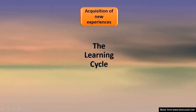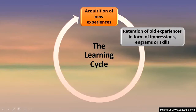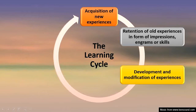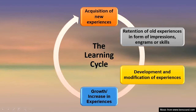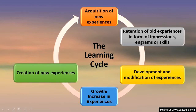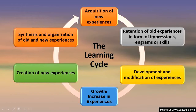This continuous process is called the learning cycle. It starts with the acquisition of new experiences. You retain your old experiences as impressions, engrams, or skills, while acquiring new ones. You modify your existing experiences or accommodate new ones by developing on them, which leads to growth and creation of new experiences. Finally, you synthesize old and new experiences to arrive at a completely new outcome, and the cycle starts rotating again.